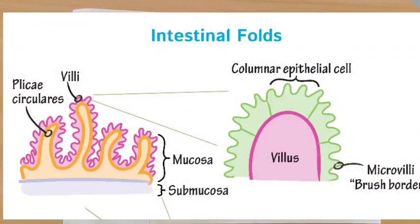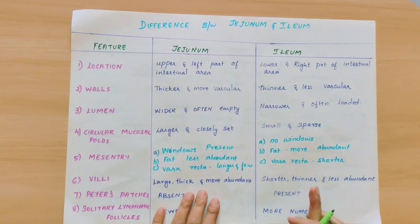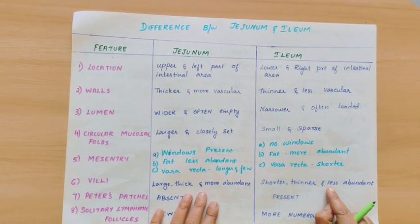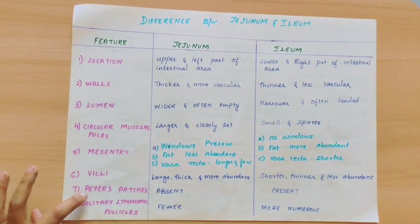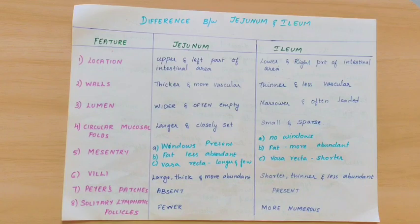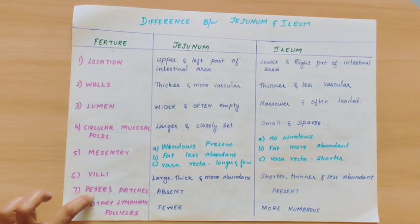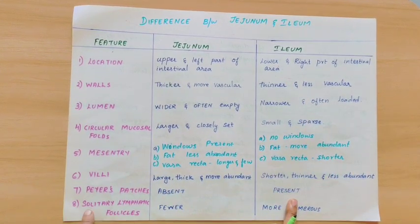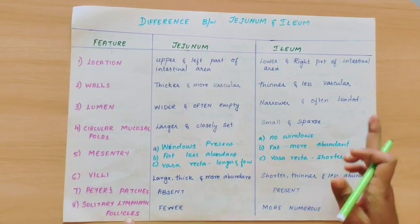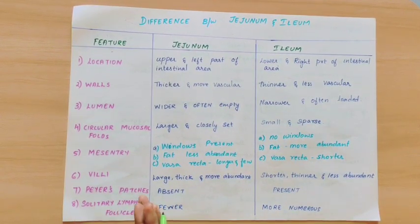Coming to the villi. The villi are small finger-like projections in the small intestine. The villi in the jejunum are large, thick, and more abundant. In the ileum, they are smaller, thinner, and fewer in number. Regarding Peyer's patches and solitary lymphatic follicles — there are two types of lymphatic follicles present in the small intestine. Peyer's patches are absent in the jejunum and present in the ileum. Solitary lymphatic follicles are present but lower in number in the ileum.